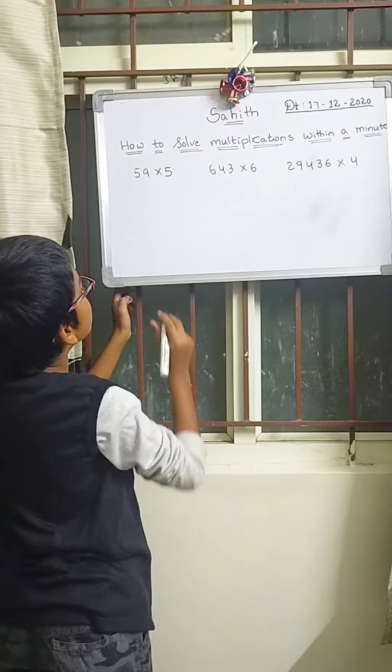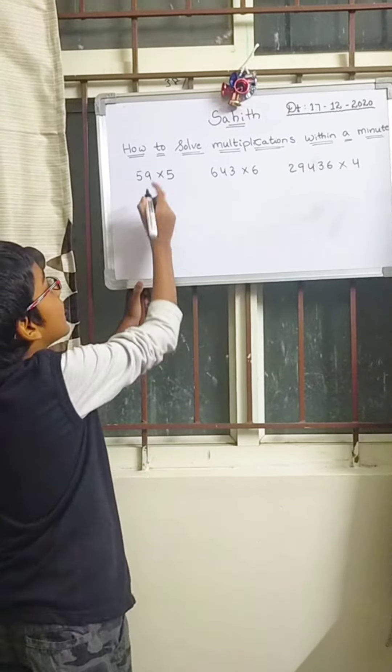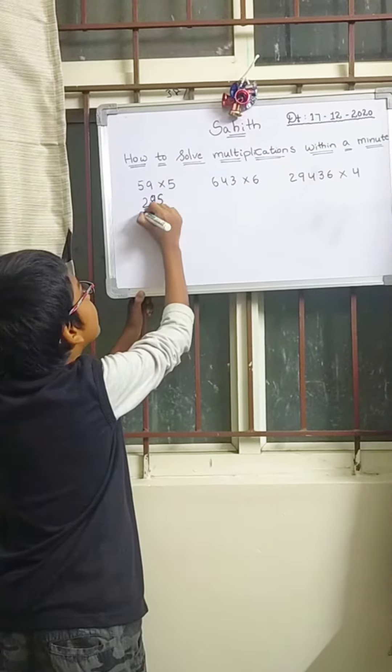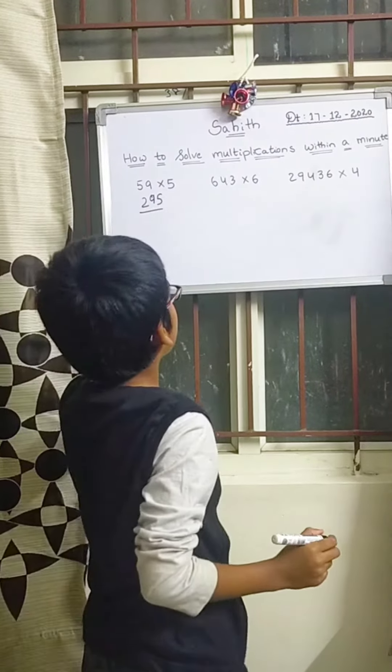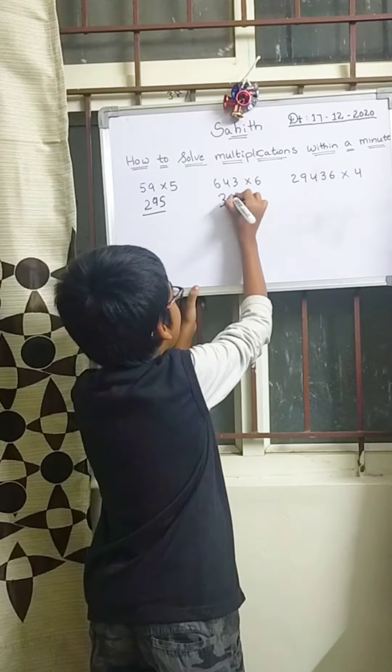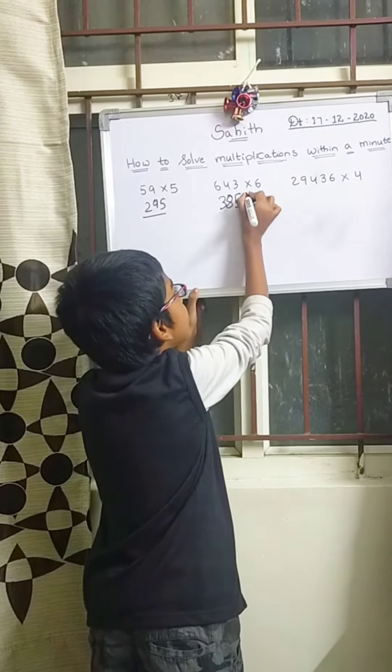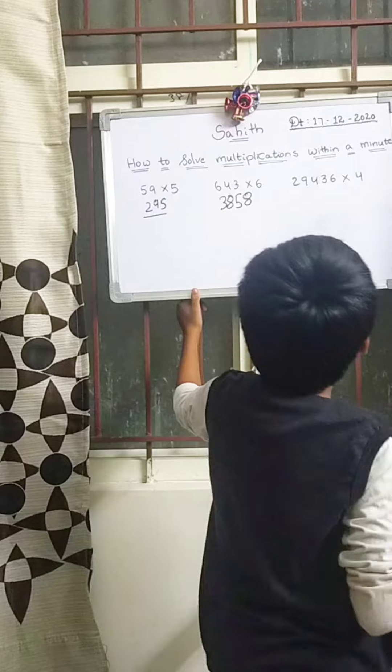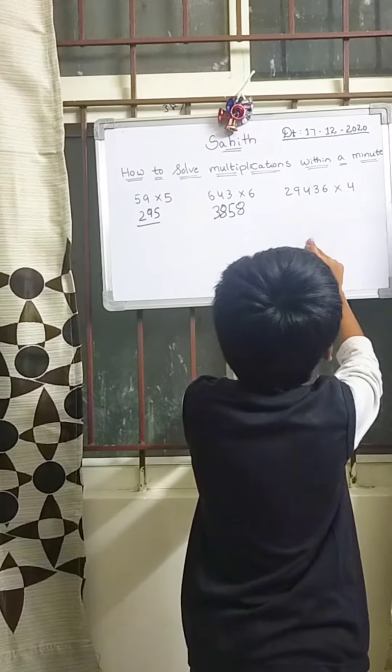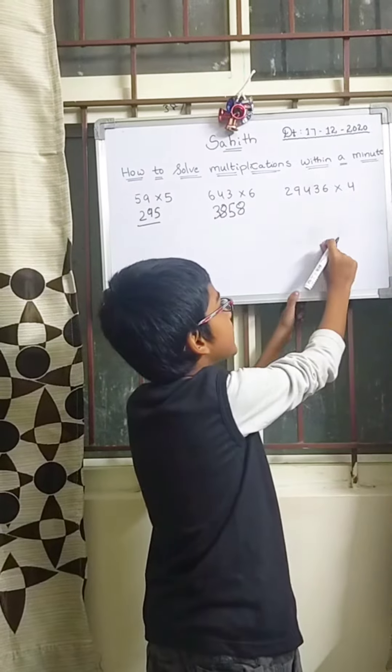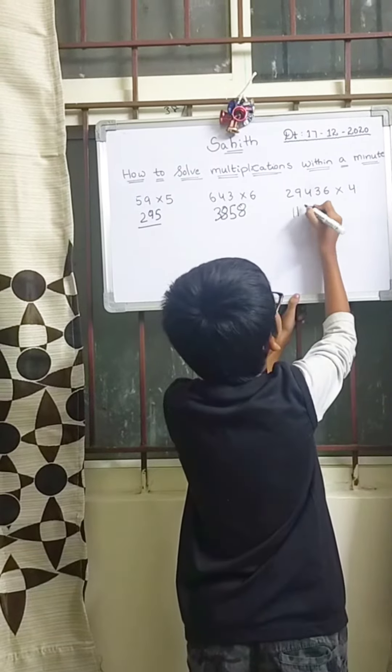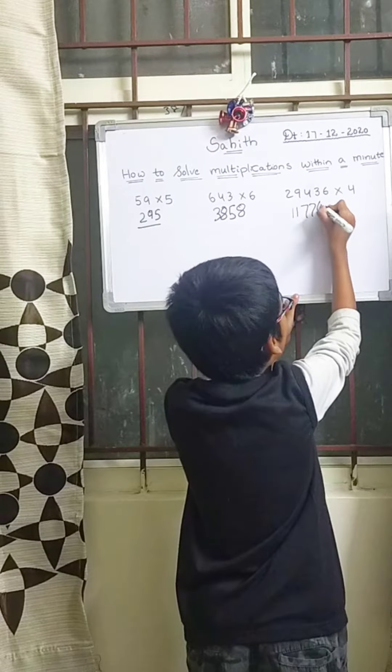First question: 59 multiplied by 5. The answer is 295. Second one: 643 multiplied by 6 is equal to 3858. Third question: 29436 multiplied by 4 is equal to 117704.